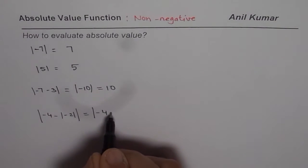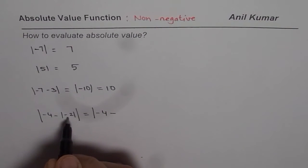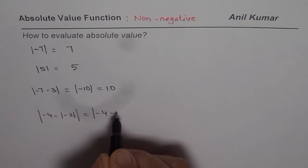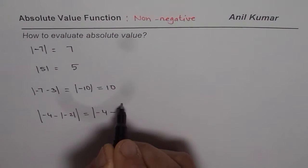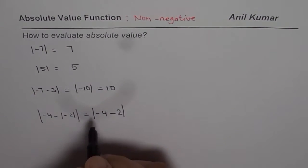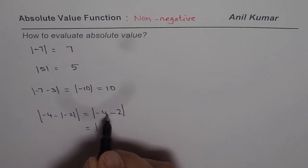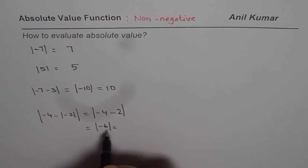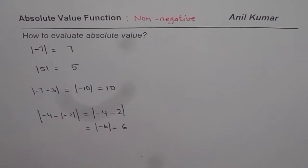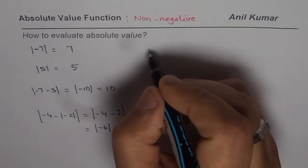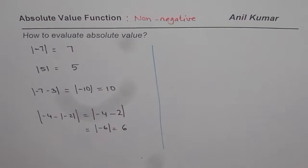This one is complicated. Let me rewrite this as -4 minus the absolute value of -2. Absolute value of -2 is 2, so we get it like this. Now we can go one more step: -4 minus 2 is -6, and as you know absolute value is non-negative, so it is plus 6. So that is how you can easily solve or evaluate absolute value of a function.